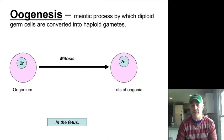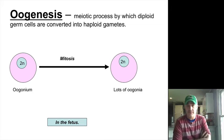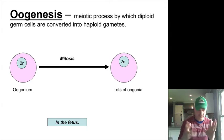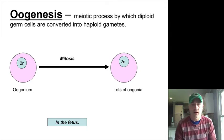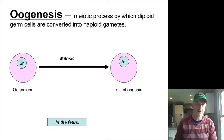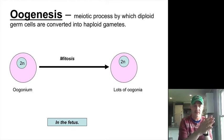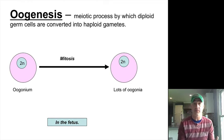The next thing to talk about is oogenesis, and what's going on with the oocytes and their development in terms of how they're being put together. We're dealing with a similar thing as with the male in that we have to get from a cell that has two copies of the genetic material to a cell that has a single copy.